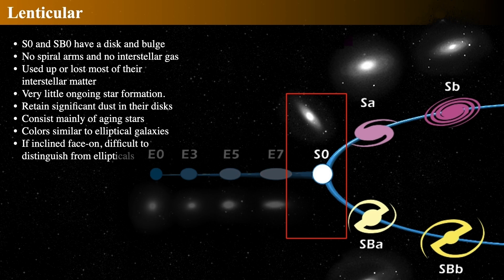They feature a significant disk, but without the prominent spiral arms of typical spiral galaxies. These galaxies must have either exhausted or lost most of their interstellar matter, which means there's little ongoing star formation. Even so, they frequently display significant dust within the disk. The stellar content is principally aging stars, just like the elliptical galaxies, and lenticular and elliptical galaxies have roughly the same spectra. We categorize both as early-type galaxies.